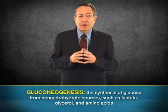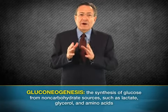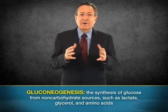The first is gluconeogenesis, or the process of synthesizing glucose from non-carbohydrate sources such as lactate, glycerol, and amino acids. In humans, the liver and kidney are the only organs that express significant amounts of glucose-6-phosphatase, the enzyme that catalyzes the final step of gluconeogenesis and glycogenolysis.